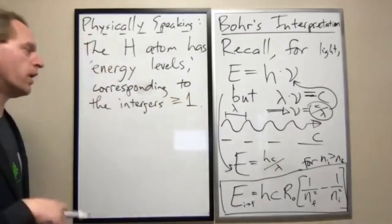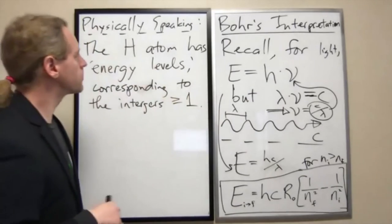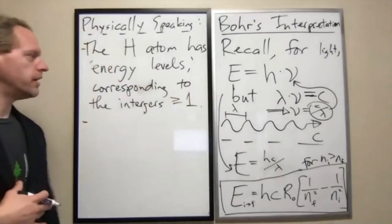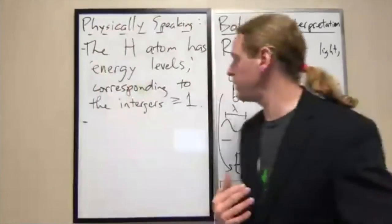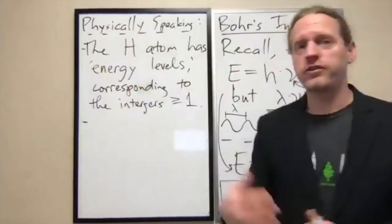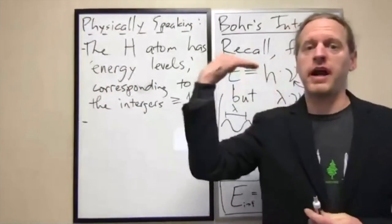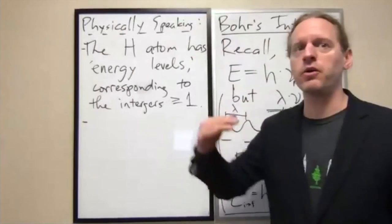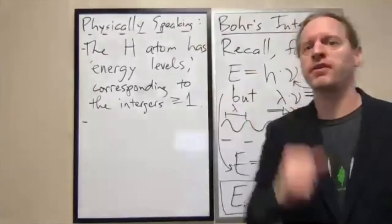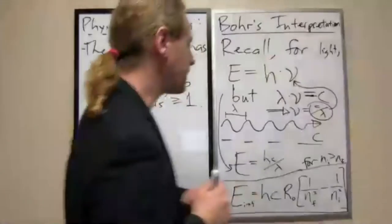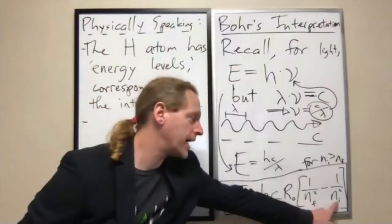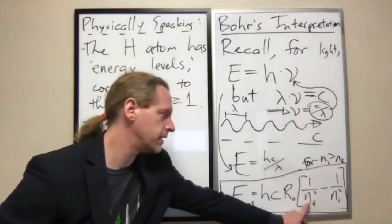The lowest one that we can go is one. If the hydrogen atom loses some energy, going from one particular energy level to a lower energy level, like N equals five to N equals two, we can predict exactly how much energy it will give off by this formula. We put in NI equals five, NF equals two.